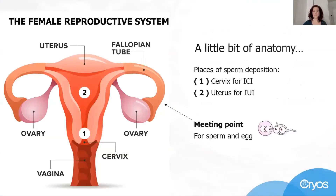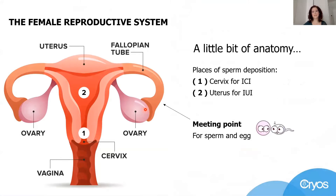Here in this picture you can see the female reproductive system, which mainly consists of the vagina, which is the outer part. Then you have the cervix, which is the neck of the womb — also referred to as the uterus. The uterus is connected to the fallopian tubes, and they are attached to the ovaries that contain the eggs.